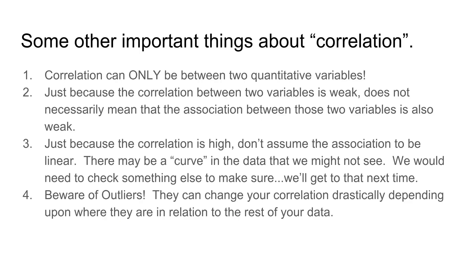Let's look at some important things about correlation you need to know. First, correlation can only be between two quantitative variables — you cannot have a correlation between categorical variables. Second, just because the correlation between two variables is weak does not mean the association between those variables is also weak. That's clear from the first example: we had a strong curved association, which made the correlation very weak or zero.